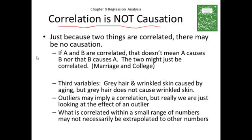This might be due to some third variable, such as, here's an example: gray hair and wrinkled skin tend to be caused by aging. But gray hair does not cause wrinkled skin, and wrinkled skin does not cause gray hair. It's a third variable causing this correlation that is often seen.